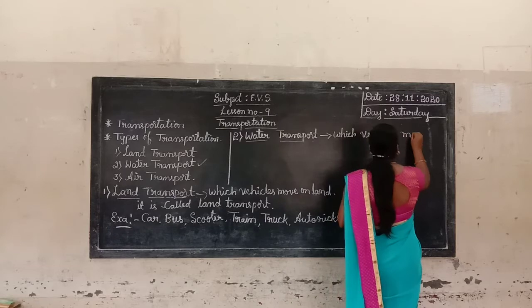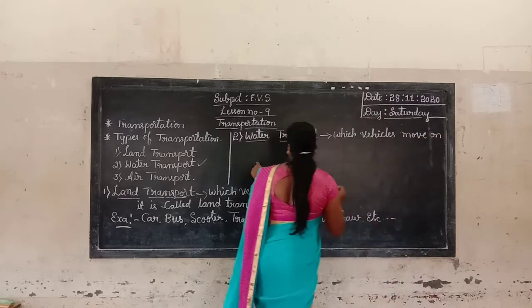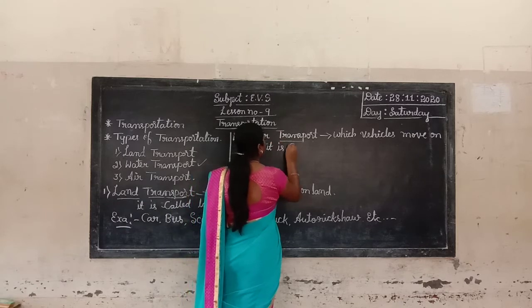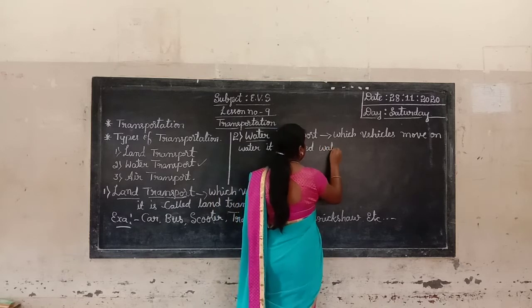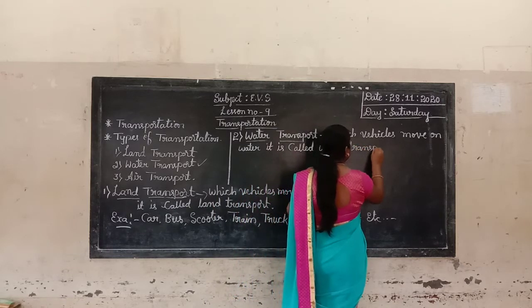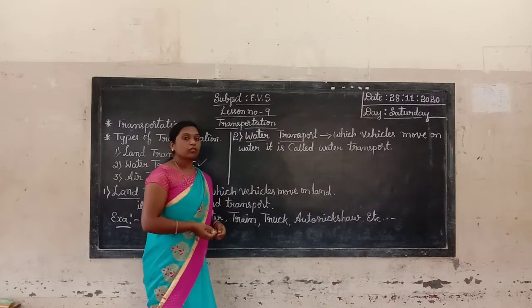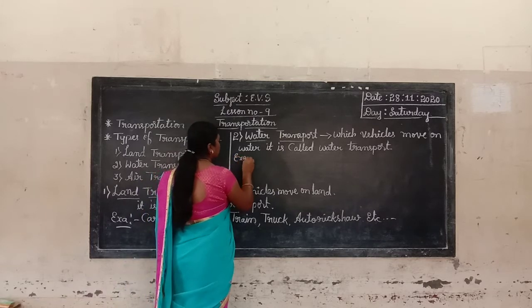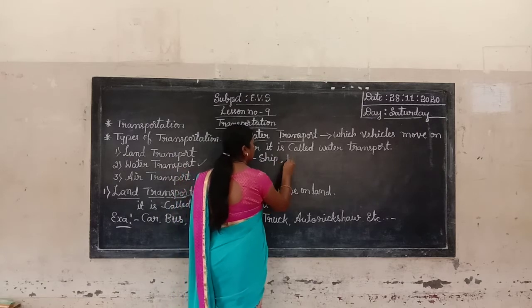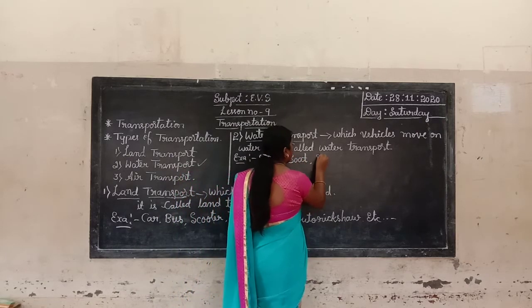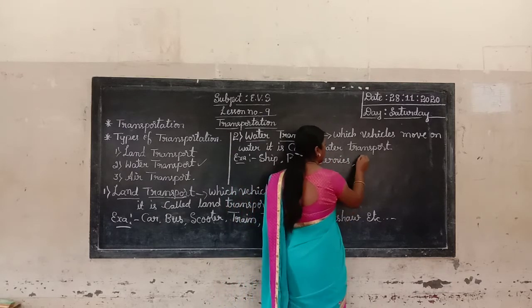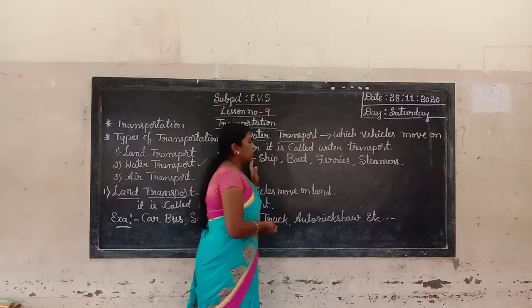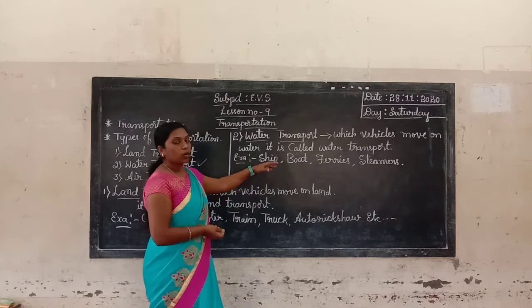Which vehicles move on water? For example: ship, boat, ferries, steamers, launchers, etc. These are the examples of water transport vehicles.